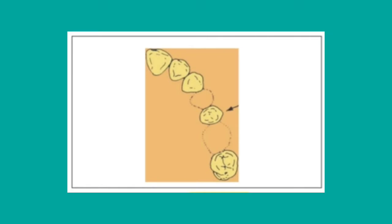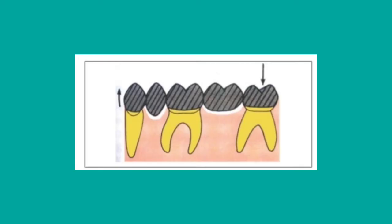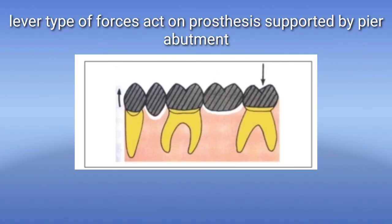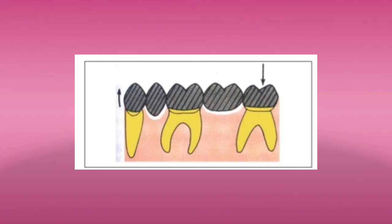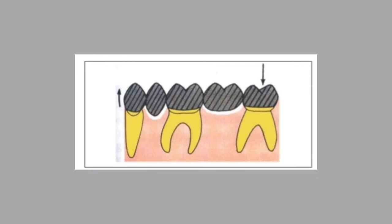Here, a single abutment is supporting two edentulous spaces. So there will be unbalanced forces which can lead to trauma of the periodontium. These forces will tend to lift one end like a lever, using the abutment as a fulcrum. In such cases, we see that the retainer's lifespan will be dramatically reduced.